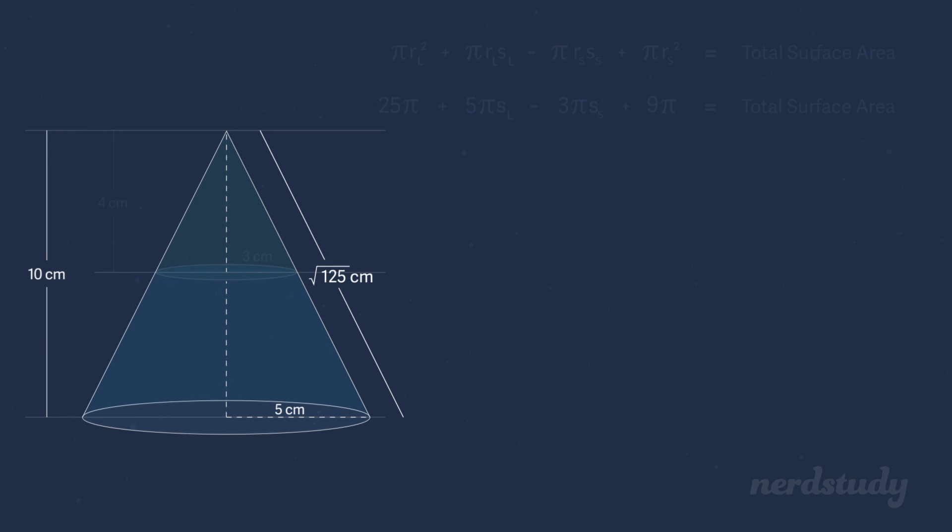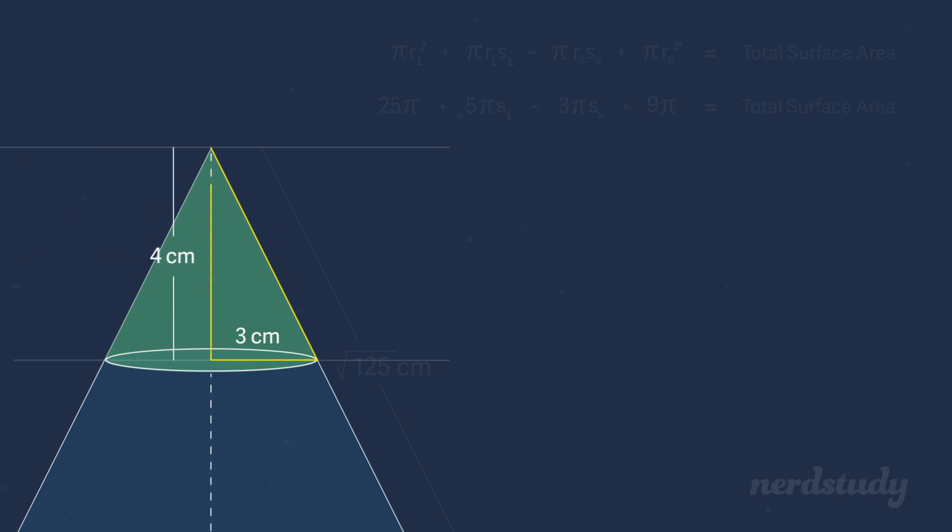Now, let's find the slant height for the small cone. So again, a squared plus b squared equals c squared. We plug in our values for a and b with 3 and 4, respectively. We get 9 plus 16 equals c squared. We add 9 and 16 to get 25 equals c squared. Let's square root both sides to get square root 25 equals c. We can simplify this down to 5 since we know that 25 is a perfect square. Good.